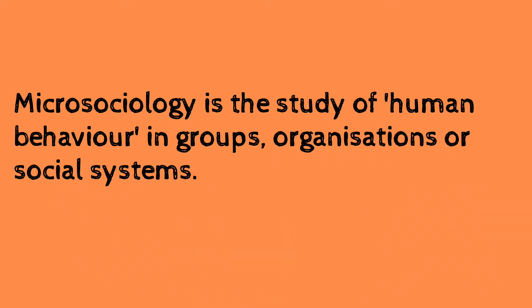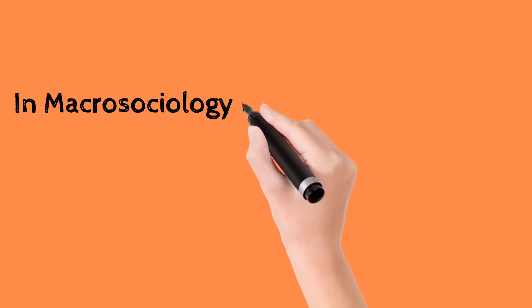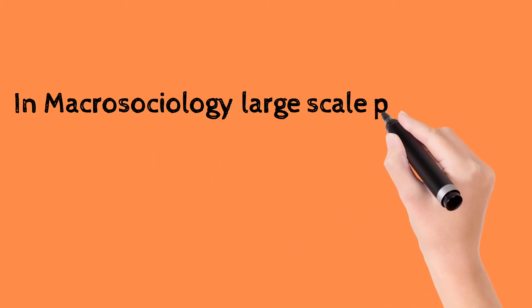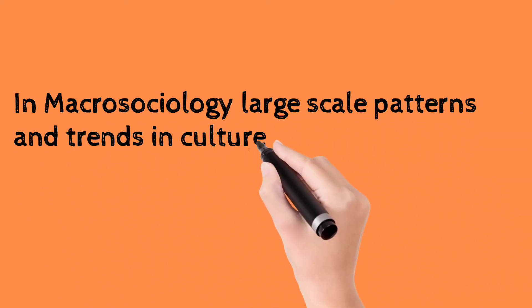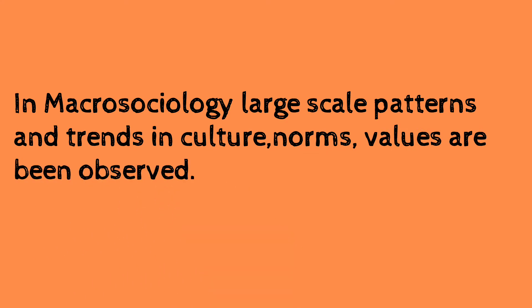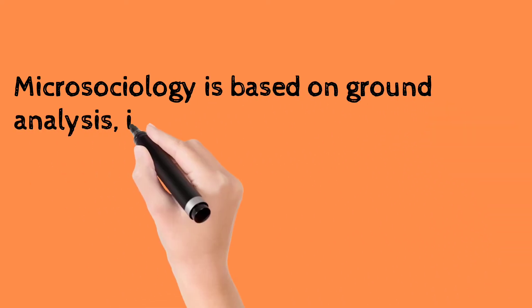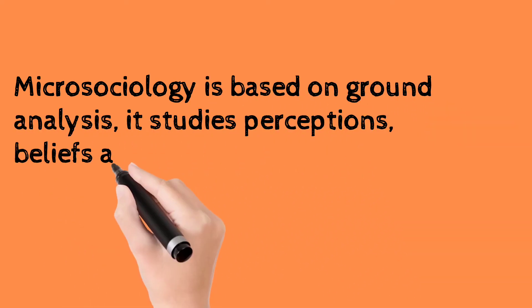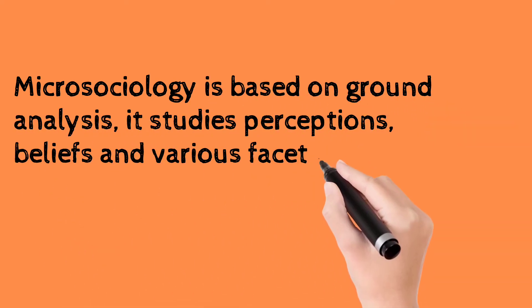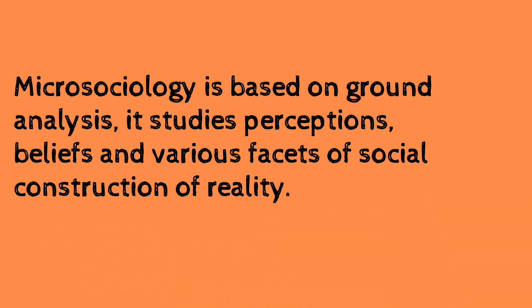3. In macrosociology, large scale patterns and trends in culture, norms, and values are being observed. On the other hand, microsociology is based on ground analysis. It studies perceptions, beliefs, and various facets of social construction of reality.